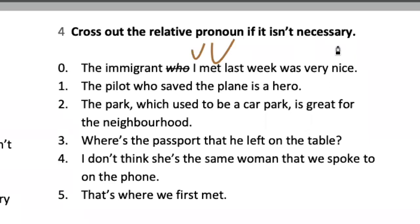'The pilot who saved the plane is a hero.' Why do you think we don't have to cross it out? Because if we take out 'who,' we don't have a subject like in number zero — 'I met.' This is very important because it's functioning as a subject. We cannot take a subject from a sentence, and that's why it's not possible to take it out. Good call.